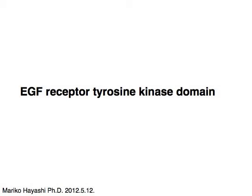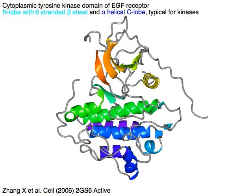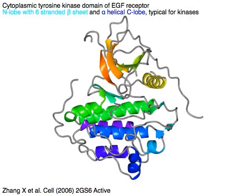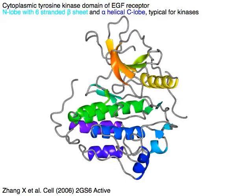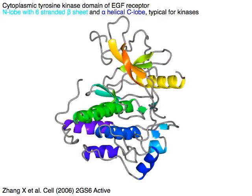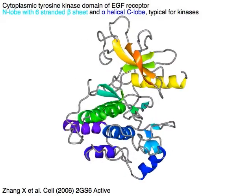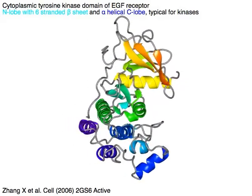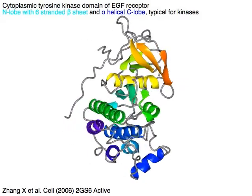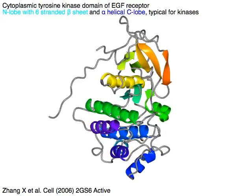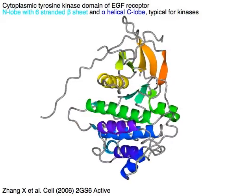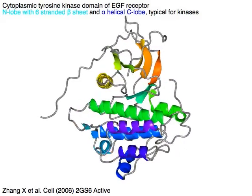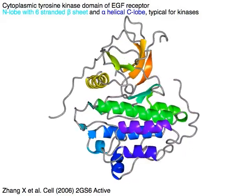The cytoplasmic tyrosine kinase domain of the EGF receptor has a cyan N-lobe with a six-stranded beta sheet and a blue alpha-helical C-lobe. This is typical for kinases.